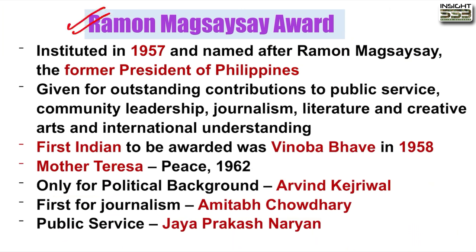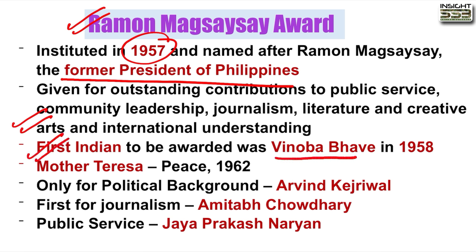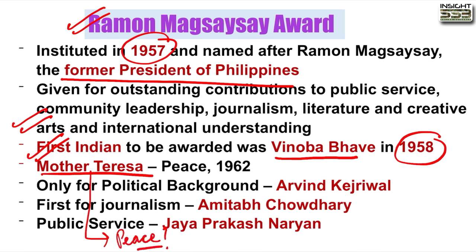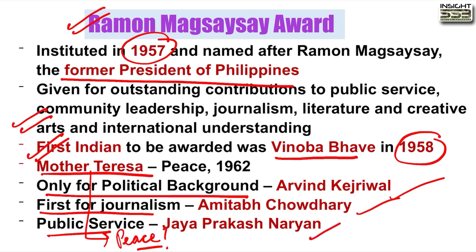Raymond Magsaysay Award was first instituted in 1957, named after the former President of the Philippines. It is given for outstanding contribution in public service, community leadership, and journalism. Initially there were 6 categories, but 5 were discontinued from 2009 onwards. The first Indian to receive it was Vinoba Bhave in 1958. Mother Teresa also received it. Other Indian recipients include Arvind Kejriwal, and for journalism, Amitabh Chaudhary; for public service, Jayaprakash Narayan.